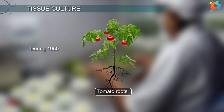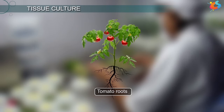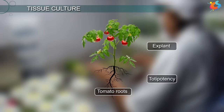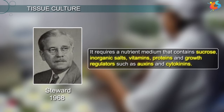During the 1950s, scientists found that any part of a plant grown in nutrient media under sterile conditions can give rise to a whole new plant. The plant part used in culture is called an explant. This property of plant cells to give rise to a whole new plant is called totipotency. The term totipotency was coined by Stewart in 1968. It requires a nutrient medium that contains sucrose, inorganic salts, vitamins, proteins, and growth regulators such as auxins and cytokinins.